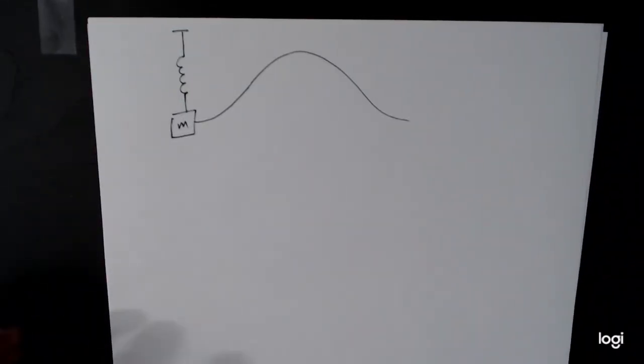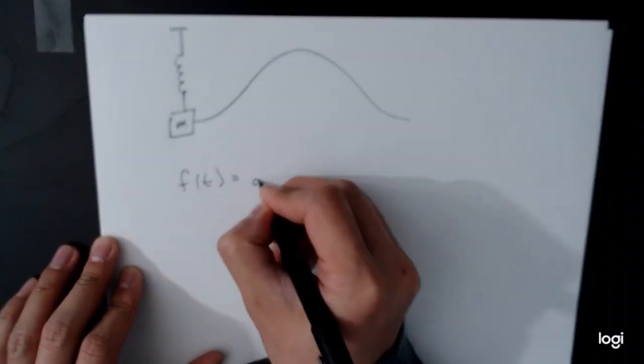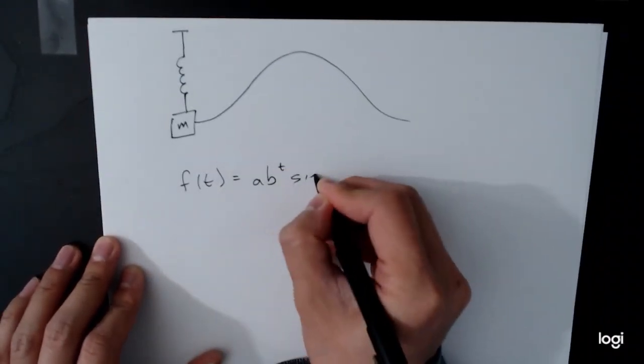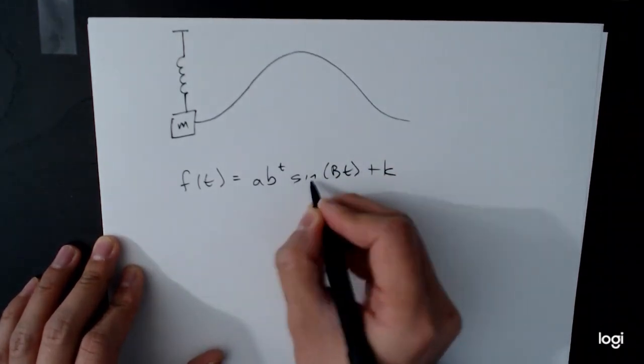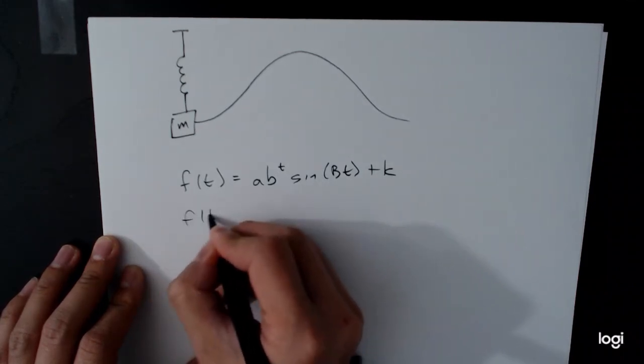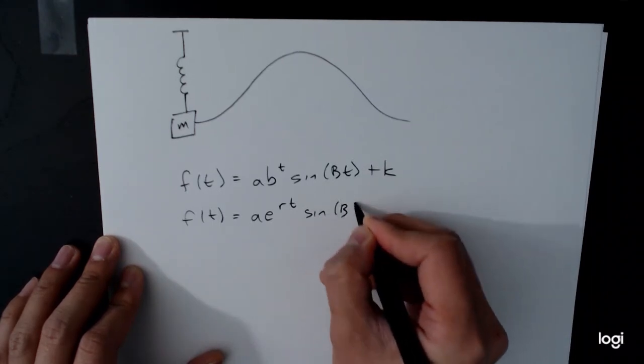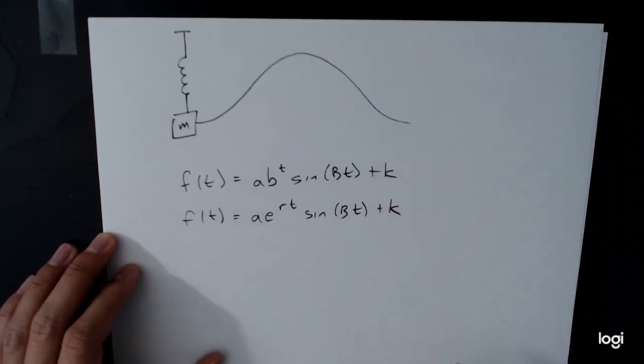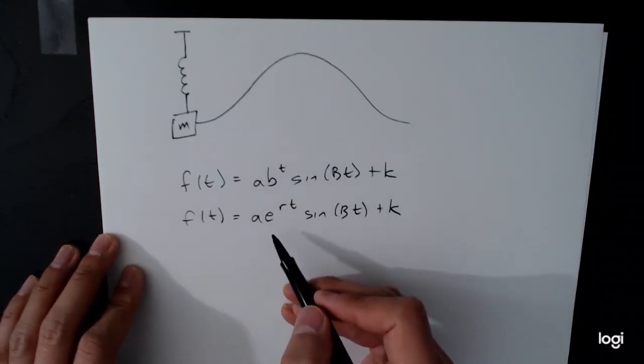There are two different types of models we could use to set that up. One model looks like this, where this sign could either be a sine or cosine term. And another model looks like this. Both of these are equivalent. There's a way of making these two the same. It just depends on what textbook you're looking at.